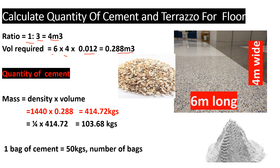Now we can proceed to finding the quantity, starting with cement. Before finding the number of bags, let's find the mass of cement needed. Mass equals density multiplied by volume. The density is 1440 kg per cubic meter and the volume is 0.288 cubic meters, giving us a total mass of 414.72 kg. This is the total mass needed to do that terrazzo finish.